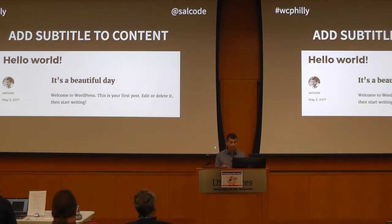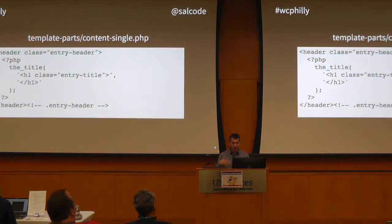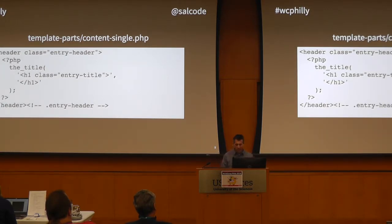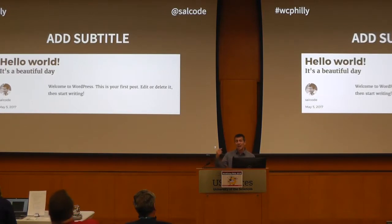First thing I did is I took my theme and made a child theme out of it, because I didn't want to edit the original theme. Going into the child theme, I found template-parts/single, which spits out that header area. In that header, you can see there's the title and that spits out an H1 tag. I said great, we need a subtitle, so I went in and added near the bottom an H2 — put in a subtitle: 'It's a beautiful day.' I took a look at the site, and indeed, now I've got a subtitle under the title.